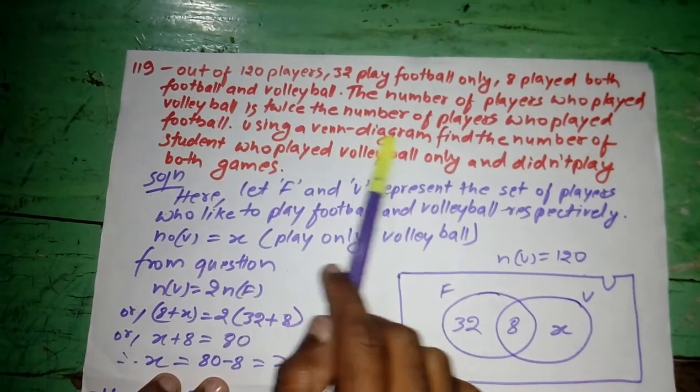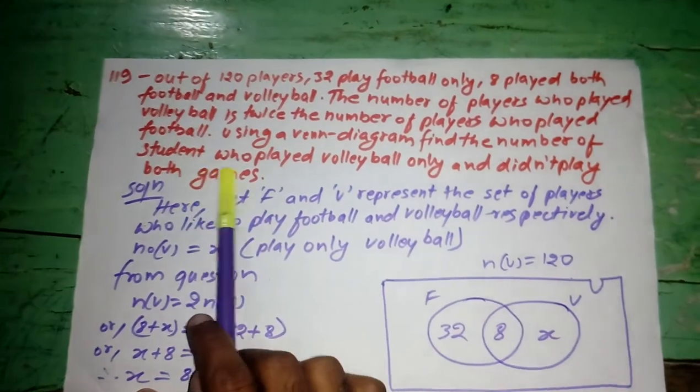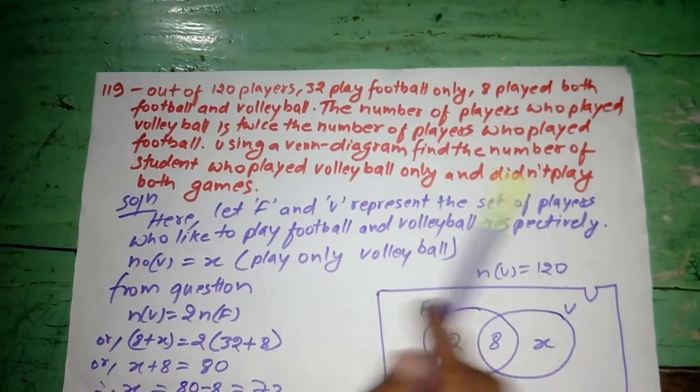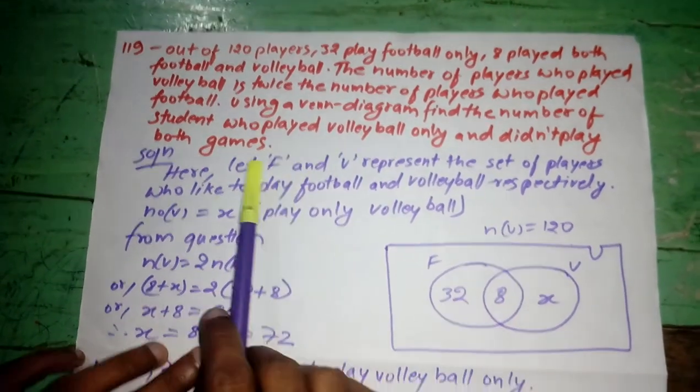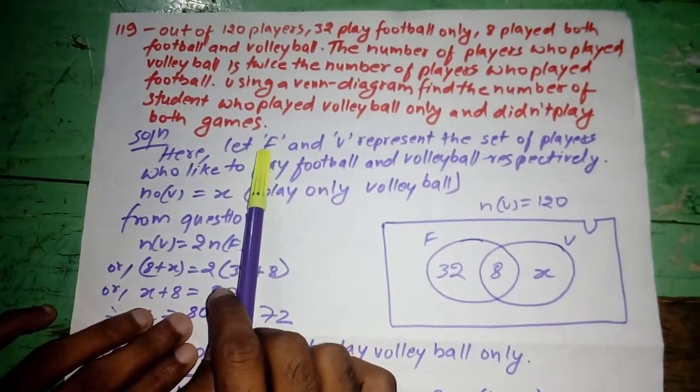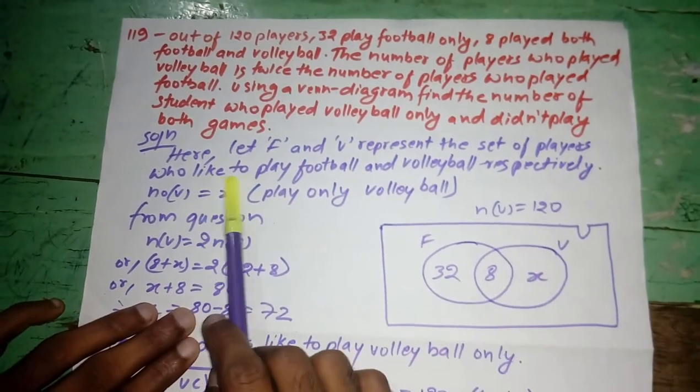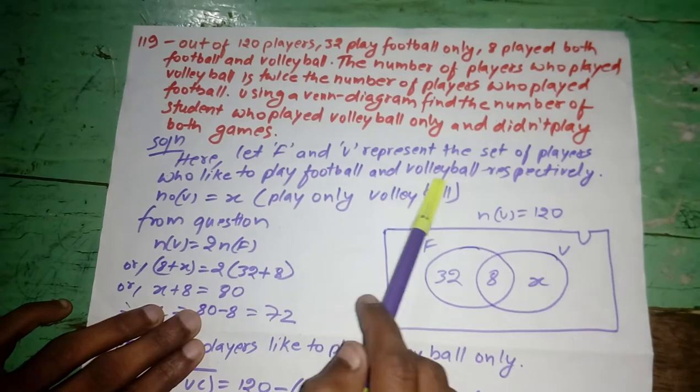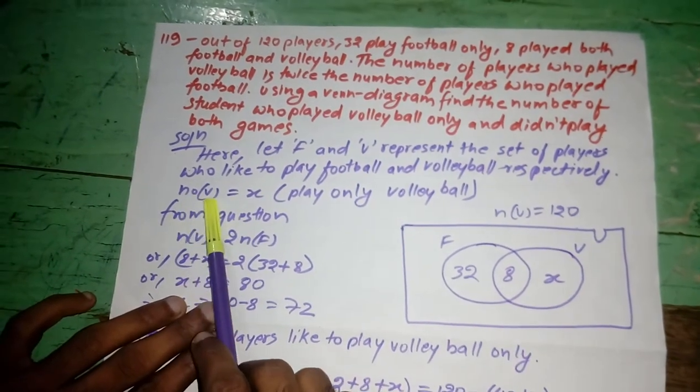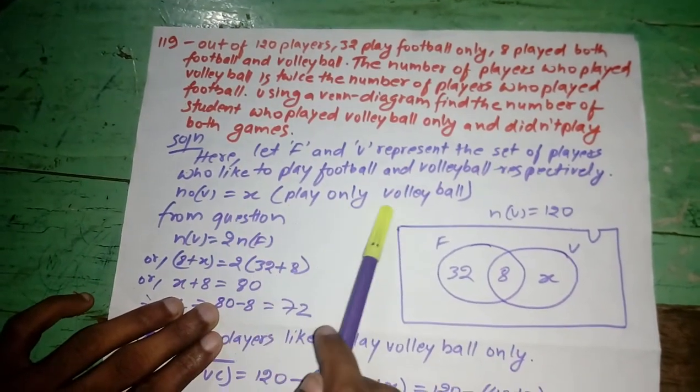Using a Venn diagram, find the number of students who played volleyball only and cannot play both the games. Here, let F and V represent the set of players who like to play football and volleyball respectively. Here, only V is equal to X, play only volleyball.